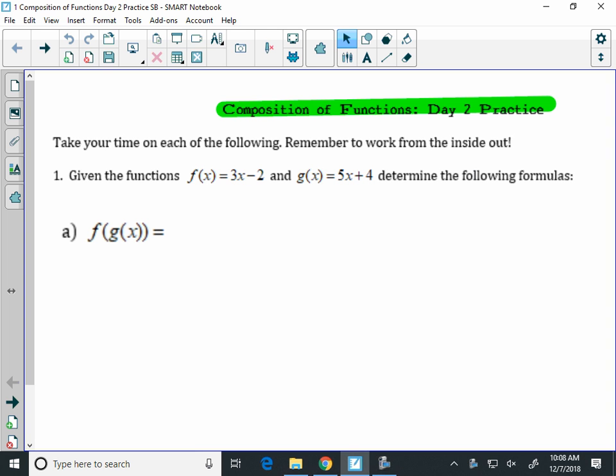Let's start with Number 1A. You are given two functions, f of x and g of x. They're asking you to compose the two functions to find f of g of x. Now remember, when you do this, you start with the function that is on the right, and you're going to take that function on the right and put it into the function on the left. That means here the function of g is on the right.